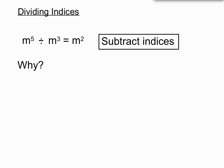Now I want to write these out in expanded form, just like we did with the multiplies, just so that we can see why this rule is the case — why do we subtract indices? Well, we can write this horizontal division of m to the 5 divided by m to the 3 written horizontally.